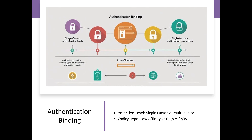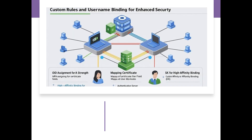Entra also supports affinity binding, which defines how uniquely a certificate identifies a user. Low affinity uses Subject Name and SAN, while high affinity uses Serial Number, Subject Key Identifier (SKI), and other strong identifiers. This helps determine which affinity level is appropriate for your certificate-based authentication setup.